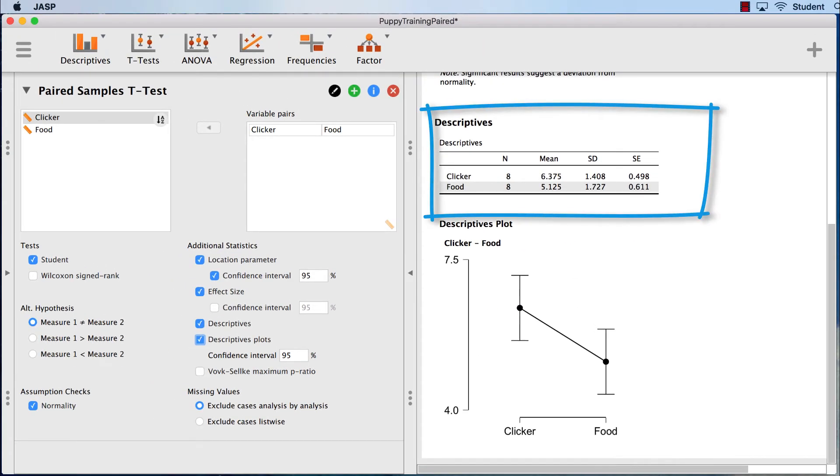I can also see the descriptive statistics for each group. The food group was more than a full point lower than clicker training. These will be important to report later. With these thoughts in mind, let's scroll back to the top.